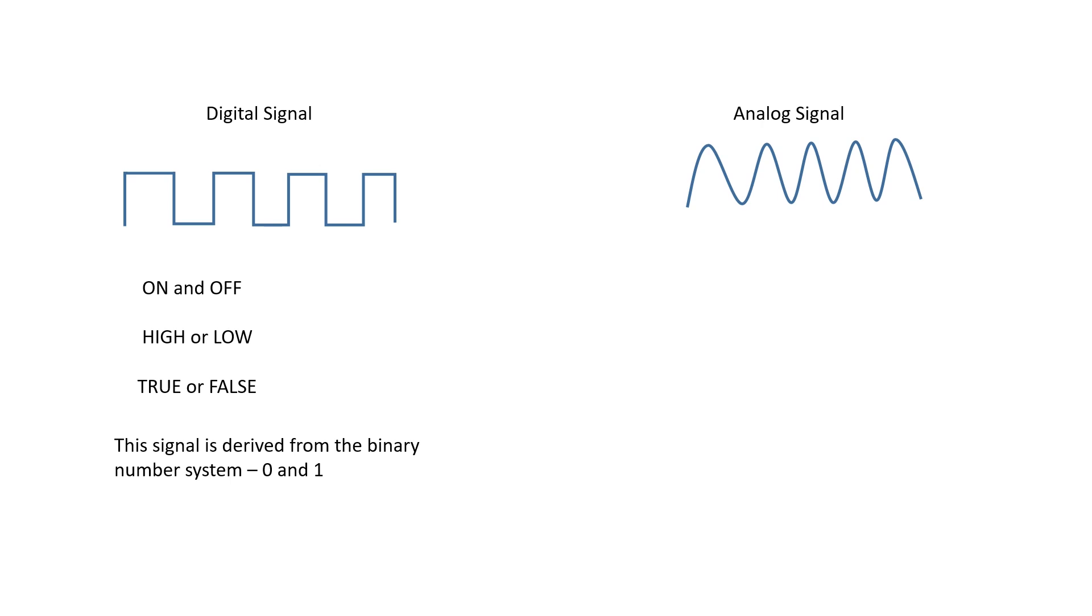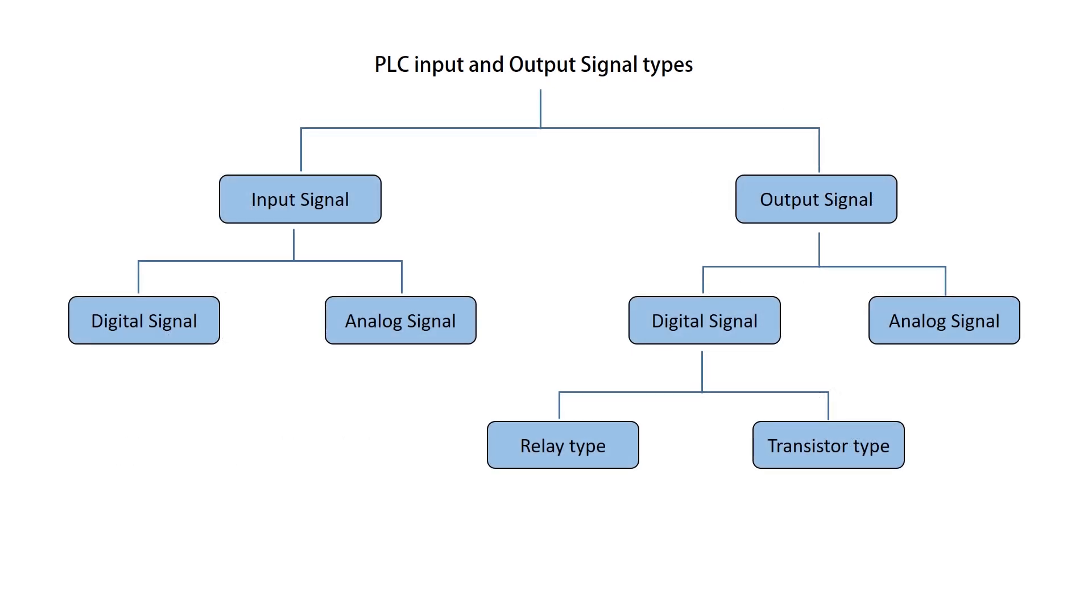Unlike digital signals, analog signals can represent a continuous range of values. They have the capability to represent a wide range of values within their specified range. Examples of analog signals include temperature, pressure, and flow rate. Now you have a basic idea, what is digital signal and analog signal?